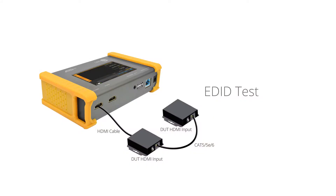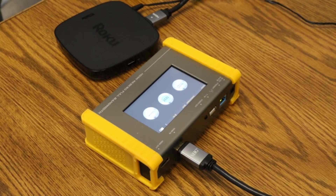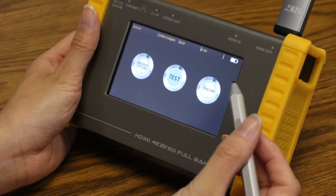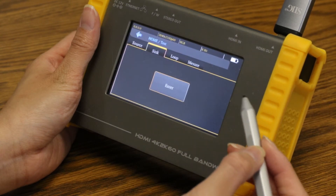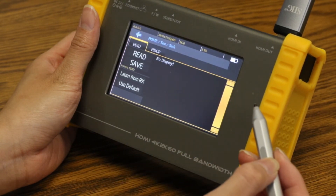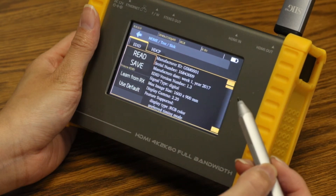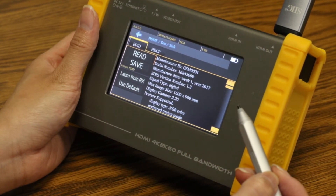Fourth, you can perform an EDID test. You can verify, view, and learn the EDID of an HDMI HD TV or other devices. Our product is now connected as the TV. Select test, under sync, select enter. Under EDID, select read. You can save, learn from the TV, and use the EDID default.